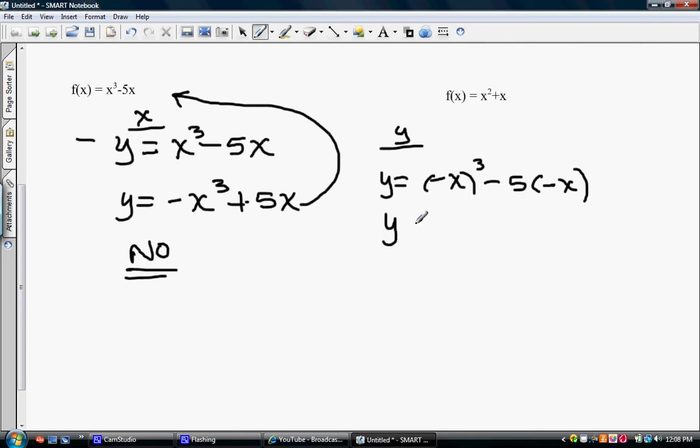The negative x cubed, when I cube a negative, it's still negative. But these two negatives here make this a positive 5x. It's still not the same as what I started with. So it's not symmetric with respect to the y.